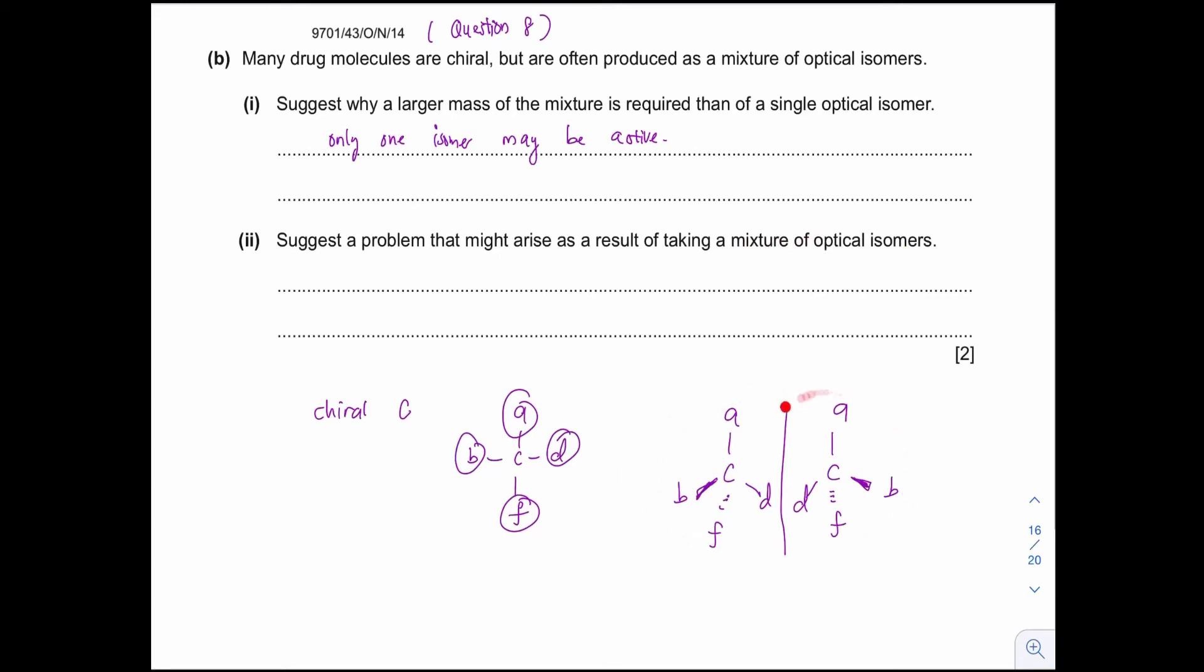Now, if we take both of it together, like I say, one of it is harmful, but one of it is active. So, therefore, the problem is that the other isomer may cause harm.